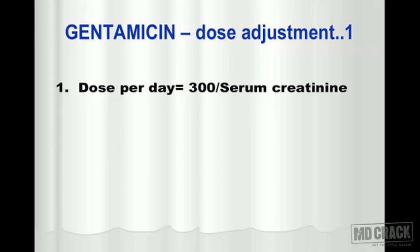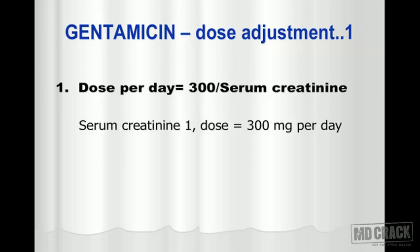The formula is: dose of gentamicin per day — that's the total dose — will be 300 divided by serum creatinine. For example, if the serum creatinine is 1, the dose is going to be 300 divided by 1, and that's going to be 300 milligrams per day. That will be the total dose of gentamicin.